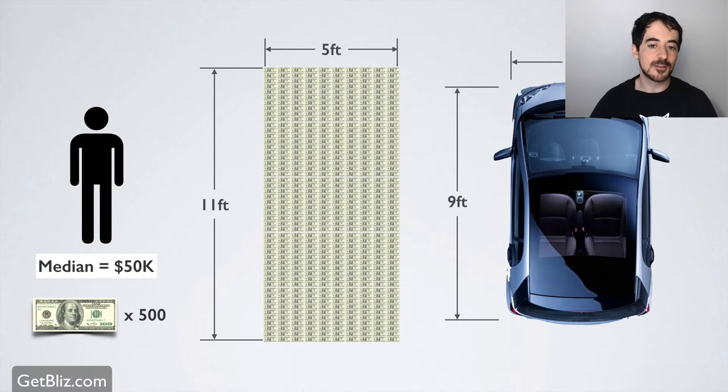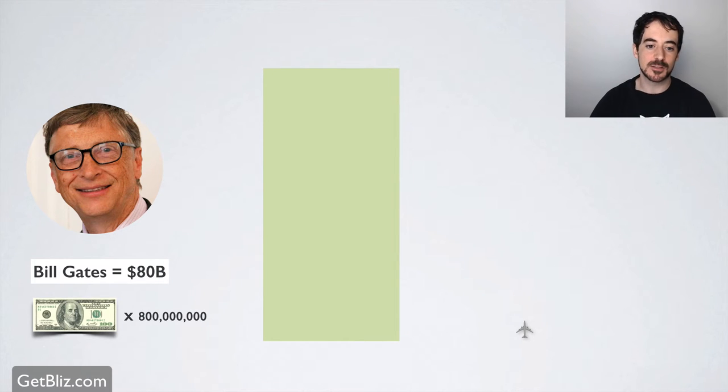Let's compare that to Bill. Let's compare that to Bill. And that's in meters. $80 billion. What does $80 billion look like in $100 bills? That's 800 million $100 bills. So if you were to lay out 800 million $100 bills on that rectangle, how big would that rectangle be?